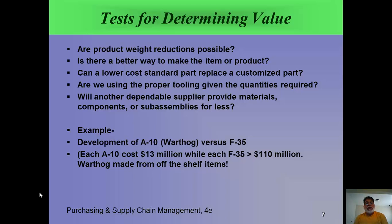Some tests for determining value include: Can we reduce weight? Is there a better way to make the item or product? Can a lower-cost standard part replace a customized part? Are we using the right equipment and tooling? For instance, if you're in a bakery making a few cakes, general-purpose equipment is fine, but if you're making hamburger buns by the millions, you'd move to mass production tools.